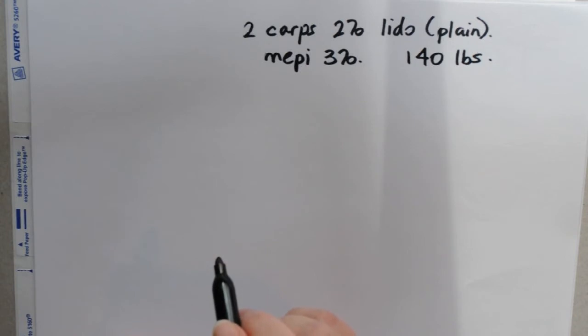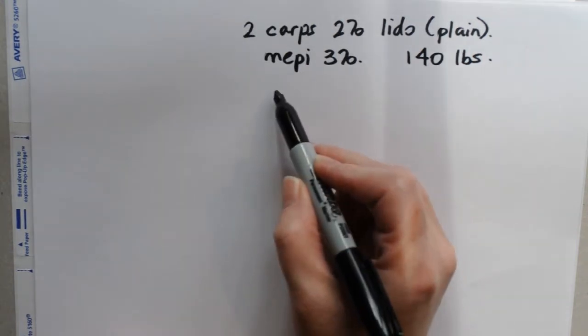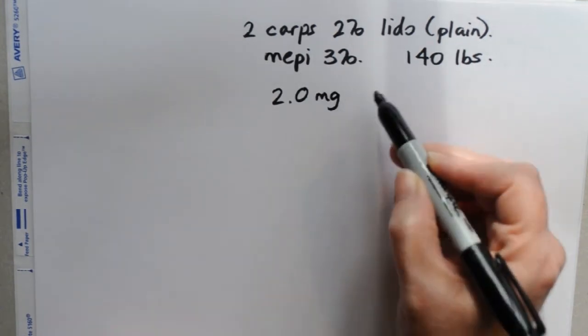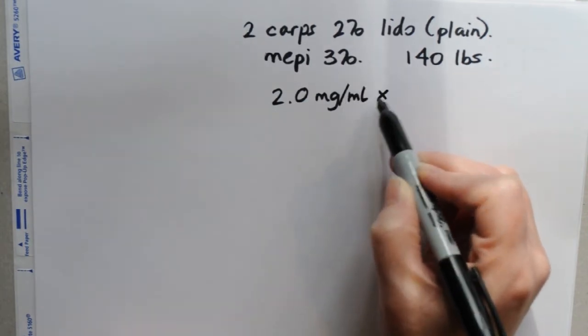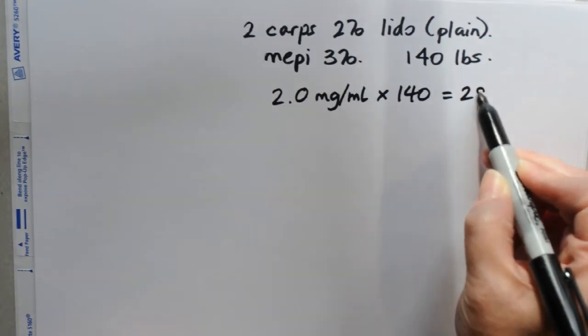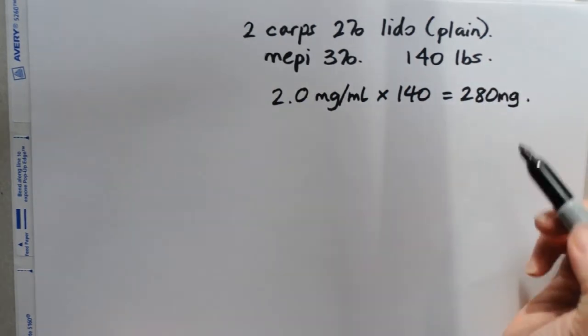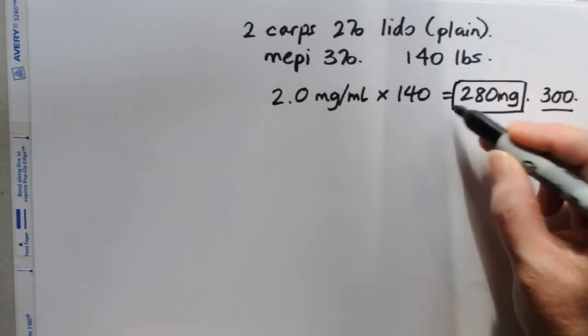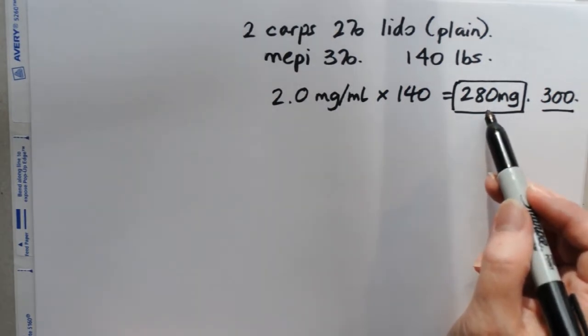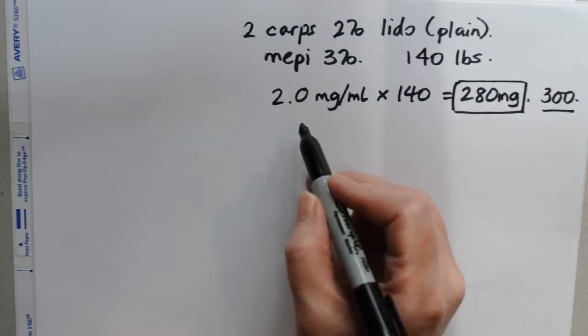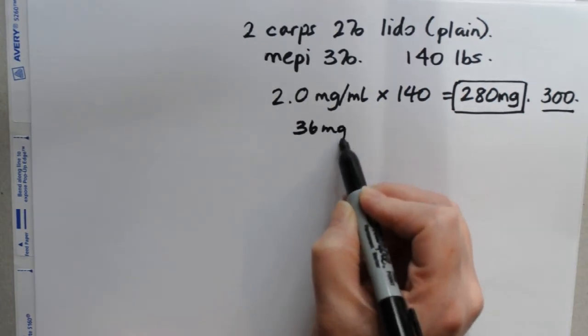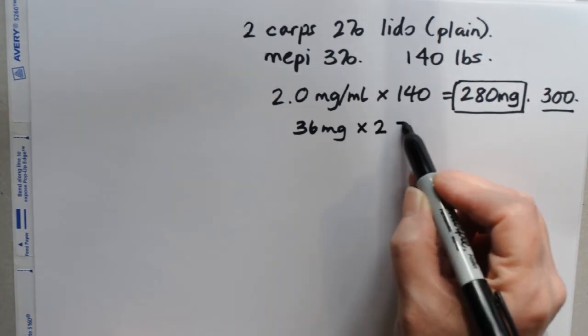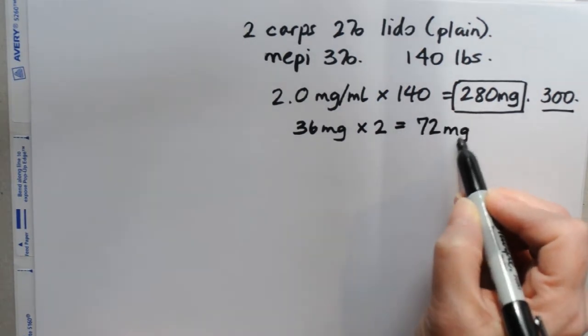So first thing we need to do is calculate the maximum dose. You don't actually have to do this first, but it's one of the first two things you have to do. So lidocaine is 2 milligrams per milliliter times the patient's weight is 280 milligrams. We know that the absolute upper dose of Lido is 300. Our calculated dose is lower, so we will use that. And so we also know that there are 36 milligrams of Lido in a carpule, and she's had 2, which means she's had 72 milligrams of drug already.